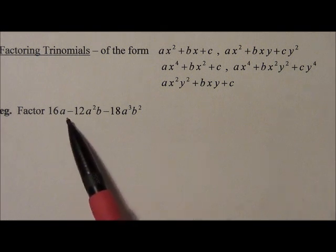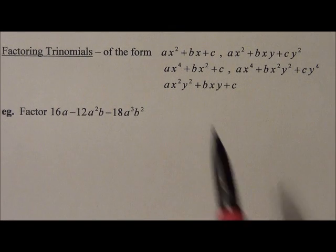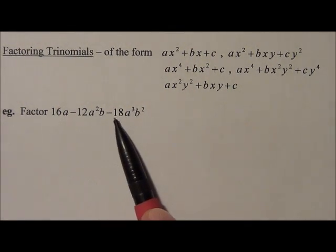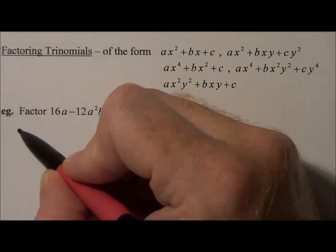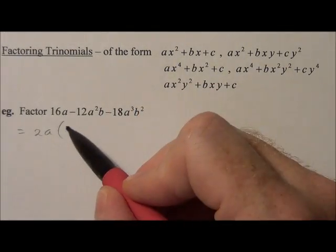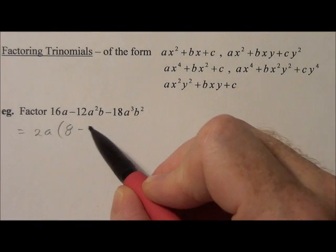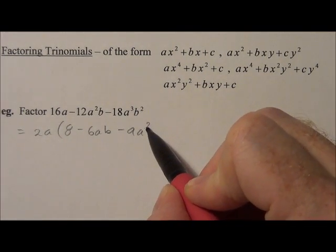So we'll take a look at, are there any common factors there? Look for common factors in all three of those terms. What do you see? So factor that greatest common factor. And I believe it's 2a. And we're left with 8 - 6ab - 9a²b².